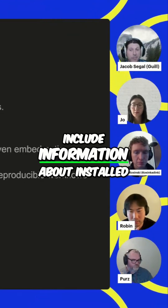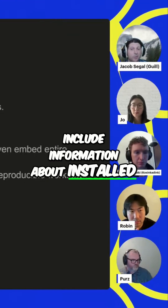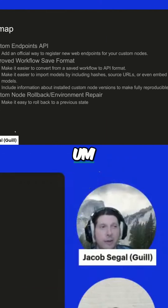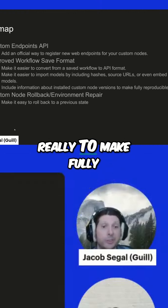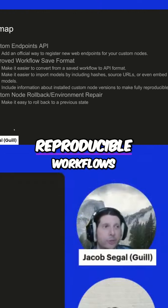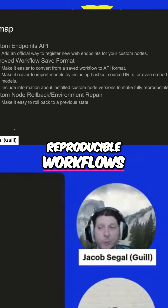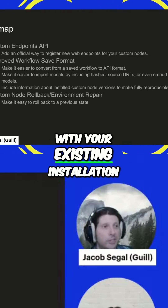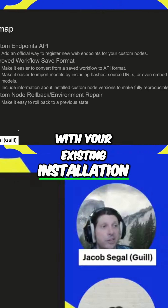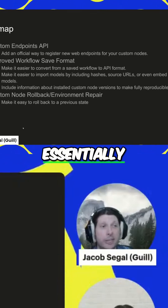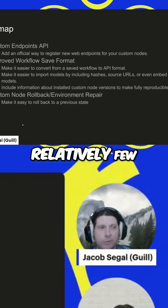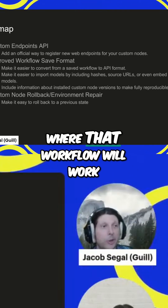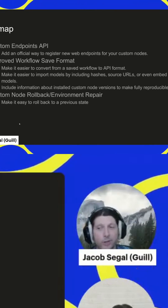We also want to include information about installed custom node versions and the ComfyUI version. The goal there is really to make fully reproducible workflows, where you can pull in a workflow and, if it doesn't work with your existing installation, you can essentially, with relatively few clicks, update to an installation where that workflow will work.